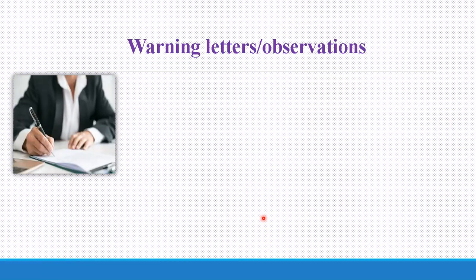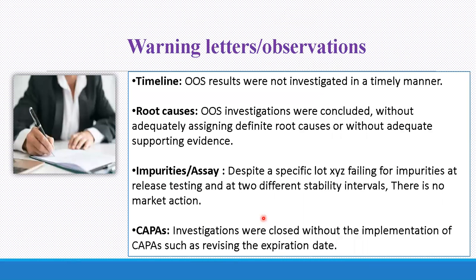Let's see some common latent observations of OOS. These include issues with timelines, root cause not properly identified, and impurities or assay findings. For example, a specific lot — say X, Y, Z — failing for an impurity at release testing and at two different stability intervals, with no market action taken. CAPAs were closed without implementation of corrective actions, such as revising the expiry date. This is one example of a common OOS observation.